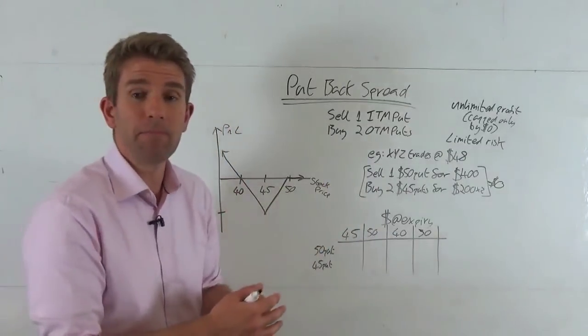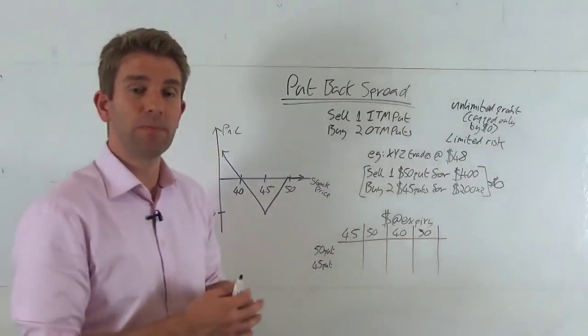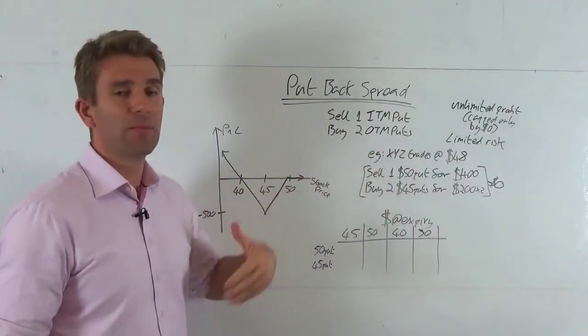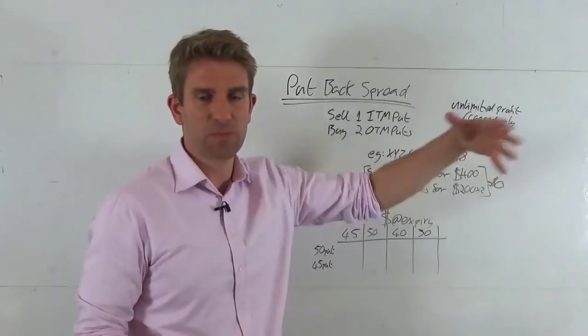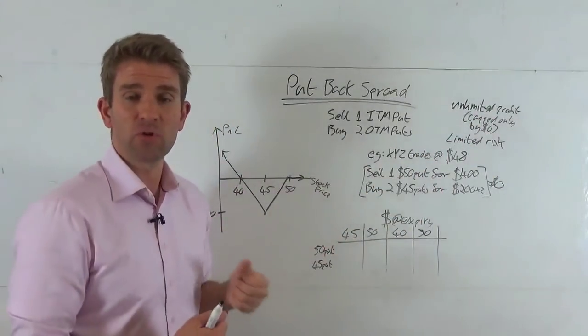But we're selling it, so we're receiving the $400. The buyer is buying the right but not the obligation to sell XYZ at $50 at the specific expiry we specify between us. That's great - $400 for that.